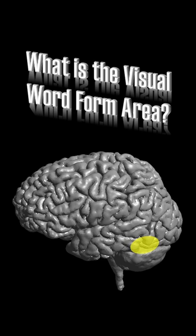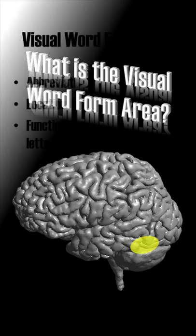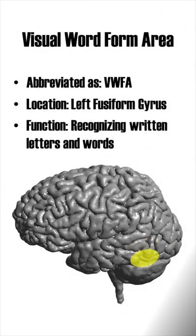What is the Visual Word Form Area? Abbreviated as VWFA, the Visual Word Form Area is located in the left fusiform gyrus on the ventral temporo-occipital border. Its main function is recognizing written letters and words.